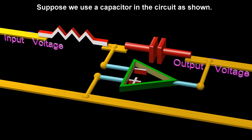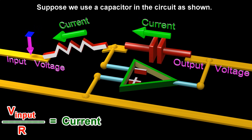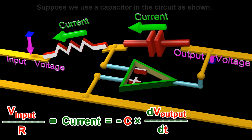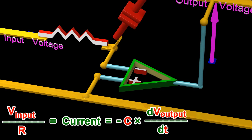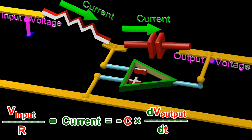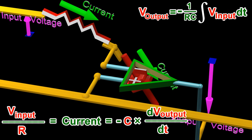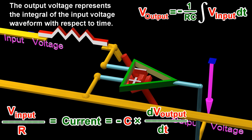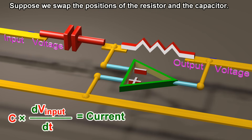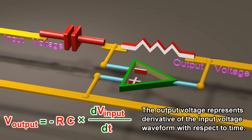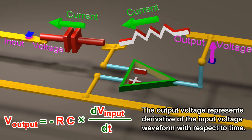Suppose we use a capacitor in the circuit as shown. The output voltage represents the integral of the input voltage waveform with respect to time. Suppose we swap the positions of the resistor and the capacitor. The output voltage represents the derivative of the input voltage waveform with respect to time.